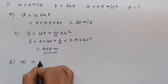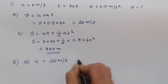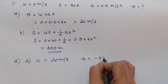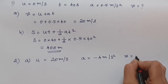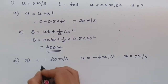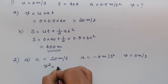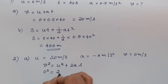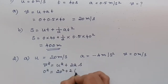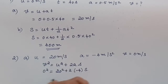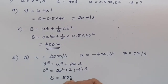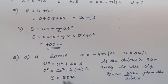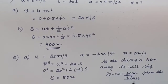For part a, the initial velocity is 20 m/s, acceleration is −4 m/s² (deceleration), and final velocity is 0 m/s. Using v² = u² + 2as: 0² = 20² + 2 × (−4) × s. Simplifying gives s = 50 m. As the debris is 80 m away, he will stop at 80 − 50 = 30 m from the debris.